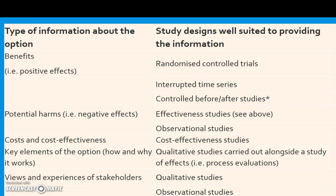For the cost and cost-effectiveness elements of our decision, we look for cost-effectiveness studies, otherwise known as economic evaluations. For elements of the option in terms of what we're going to select, we may inform that by qualitative studies and those studies that take place alongside trials, such as process evaluations.